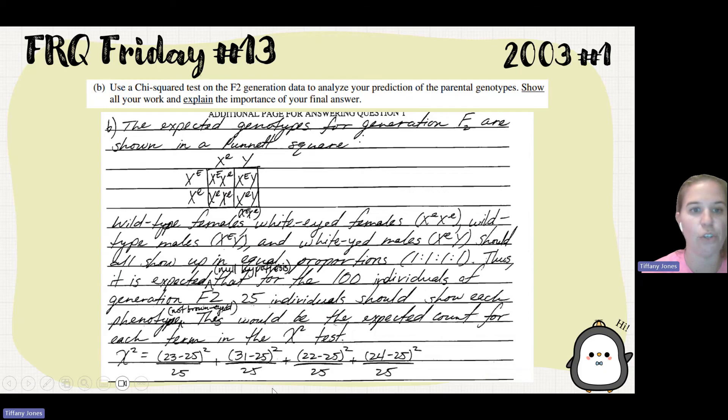Here's all your points. The student wrote, if the genotypes, the F2 are shown in the Punnett square, they show you the Punnett square. Wild-type female, wild-type male, white-eyed female, and white-eyed males should show up in equal proportions, one-to-one-to-one-to-one. Thus, it is expected for 100 individuals, generation F2, 25 individuals should show each of the phenotypes.